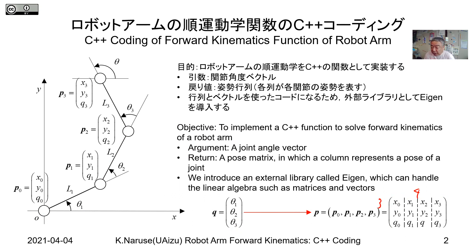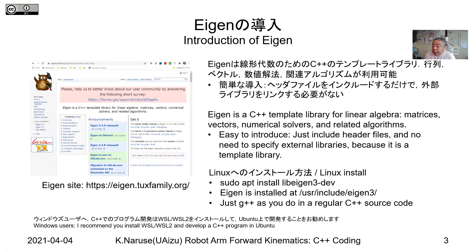We will represent these vectors and matrices with the library called Eigen. Eigen is a C++ template library for linear algebra. It can represent matrices and vectors, and it provides numerical solvers like the inverse matrix and related algorithms.